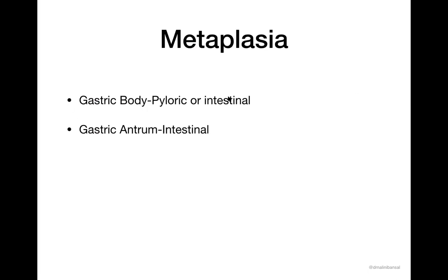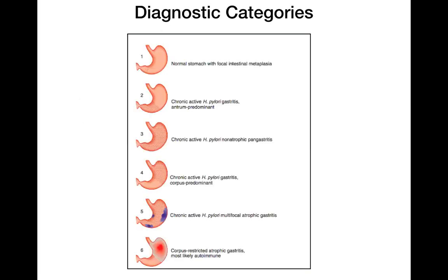Metaplasia in the gastric body can be pyloric metaplasia or intestinal metaplasia, whereas in the gastric antrum only intestinal metaplasia is seen. These are the different categories into which you can classify your biopsy if you are getting it separately from the body and antrum. However, this system can only be applied if you have multiple biopsies from the stomach — if you have only a single biopsy, this system cannot be applied.